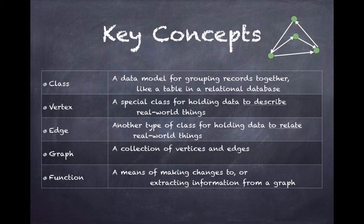A vertex is a special class for holding data to describe real-world things. An edge is another type of class for holding data to relate real-world things. A graph is a collection of vertices and edges, and a function is a means of making changes to or extracting information from a graph.